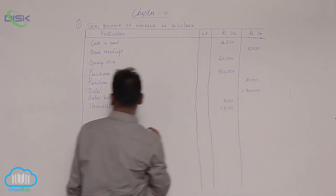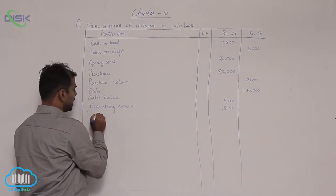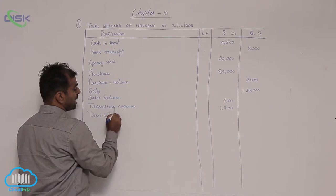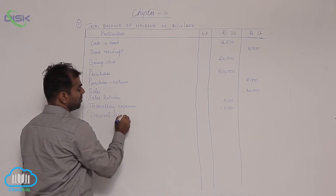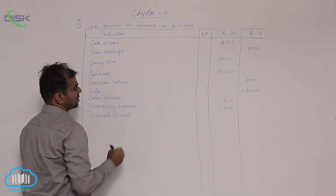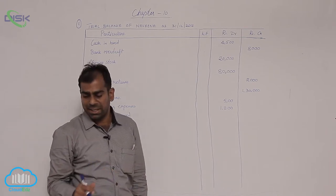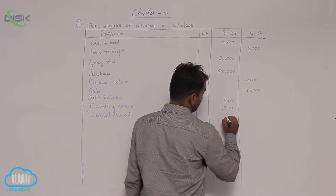Then you have discount allowed. Discount allowed, if you remember your cash book triple column, it was on the debit side. So discount allowed we enter as a debit balance. How much? 600.